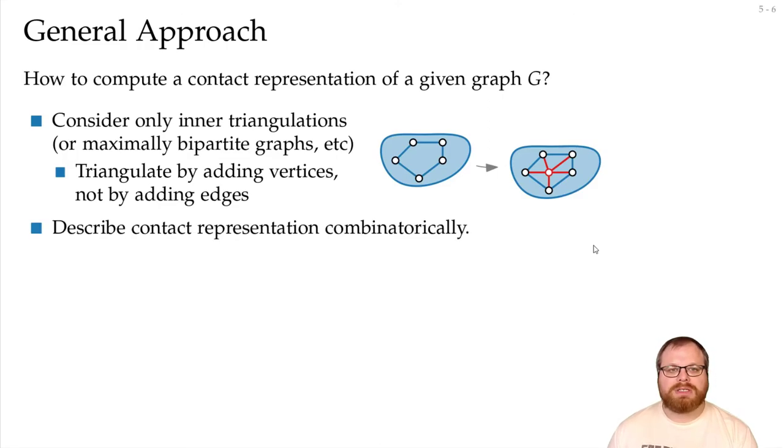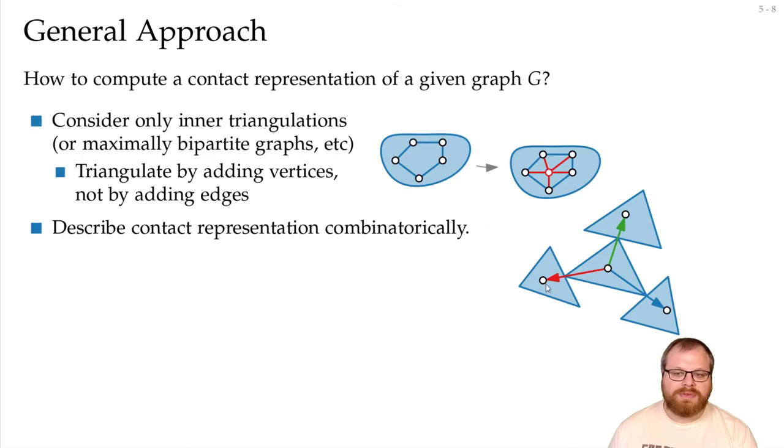In the second step, we want to describe the contact representation combinatorially. So we want to get rid of the geometry and find some properties that we can use, and then we only have to combinatorially find something. For example, we can use a Schnyder realizer for those triangles, and then those directed edges represent the point-to-edge contacts. And then, if we find a Schnyder realizer, then we can find a representation from that. For that, we always have to ask which objects can contact each other, and in which way.